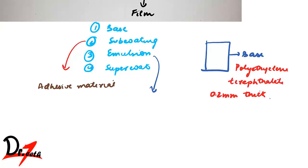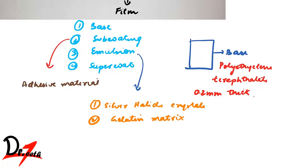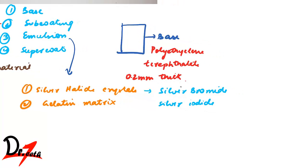Now the emulsion has two components. It has silver halide crystals and gelatin matrix. Now this silver halide crystal has silver bromide and silver iodide. Bromide is around 80 to 99 percent. And silver iodide is just 1 to 10 percent. So the function of silver iodide is to increase the sensitivity of the film. Also we add some contaminants like sulfur. So this also increases the sensitivity of the film.